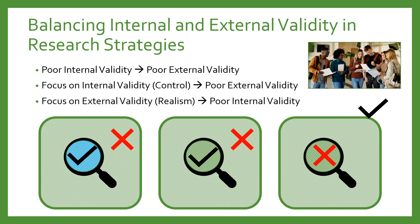For example, suppose your hypothesis is that first-year college students who receive an intervention designed to increase their sense of belonging will have better first-year completion rates than students who receive information about study strategies. There would be poor internal validity if the intervention did not actually increase students' sense of belonging, or if the conditions were not randomly assigned — for instance, if in-person students got the belongingness intervention and online students got the study strategies. This lack of confidence in the findings within the sample makes it difficult to generalize about the effectiveness of the intervention for students outside the sample, affecting external validity.